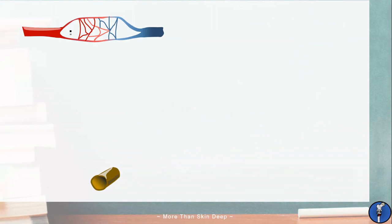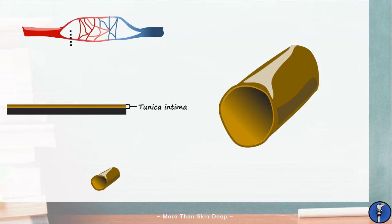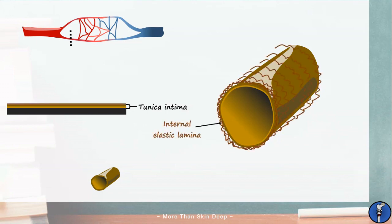Moving up in complexity we have the arterioles. These have a tunica intima like capillaries although the lumen is considerably larger. However in arterioles this tunica intima is surrounded by a sleeve of elastic fibers known as the internal elastic lamina. This allows the arterioles to recoil after they expand due to high pressures in the lumen thus maintaining blood pressure.